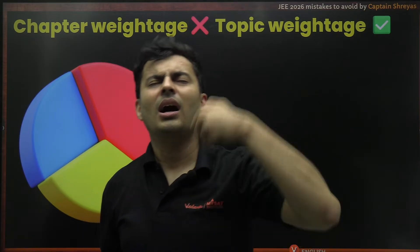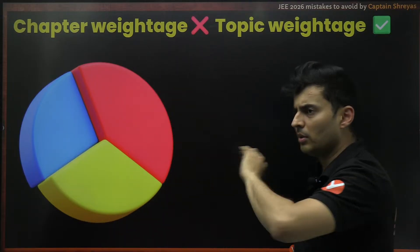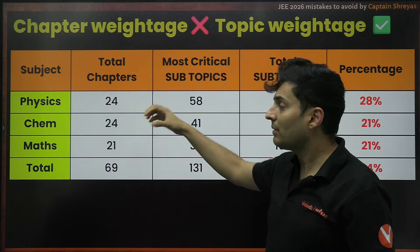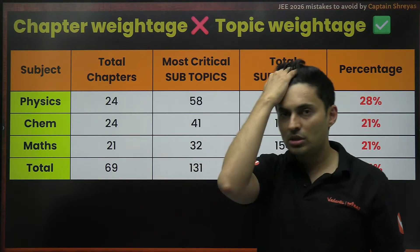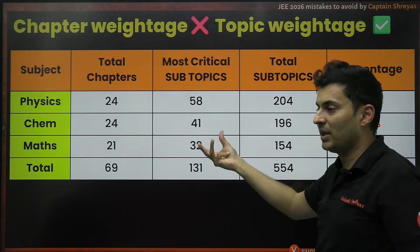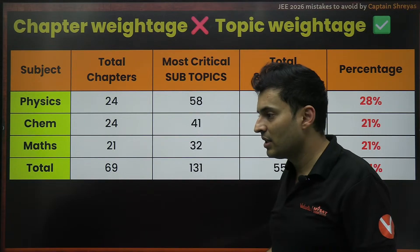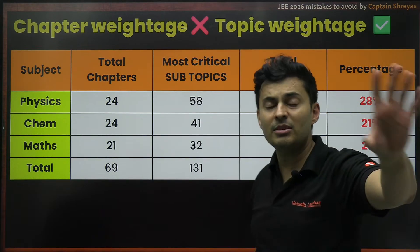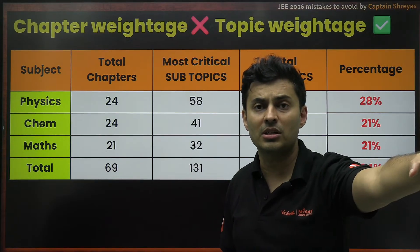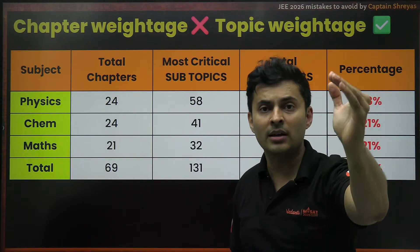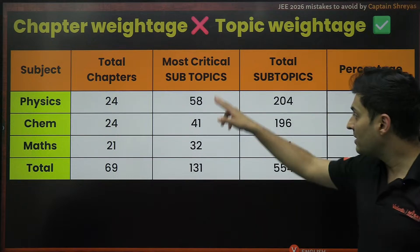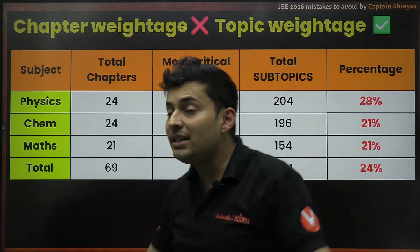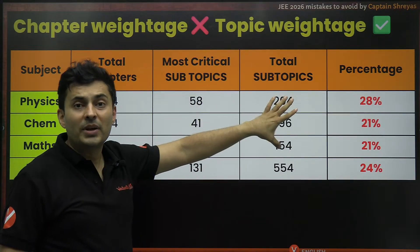There are only certain subtopics which again and again come in the examination. We've done the analysis. In physics there are 24 very important chapters, in maths 21, in chemistry 24. But if you count the subtopics which are repeated again and again in the past couple of years, they are just 58 in physics, 41 in chemistry, and 32 in mathematics. They are not even equally distributed. Doing chapter-level analysis is a waste, and giving equal weightage to all chapters is also a waste.